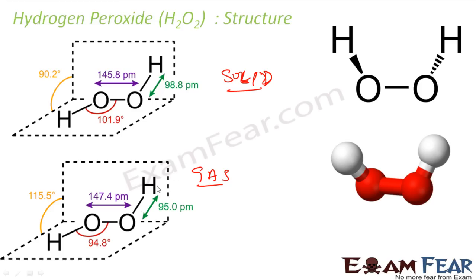If you see the bond length of an O-H, the bond length is actually decreasing for gas. This is 95 picometres, this is 98 picometres, and the angle also changes — this is 90.2 and this is 11.5. There is nothing more to explain here because this is all observed experimentally in solid and gas.